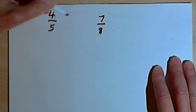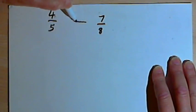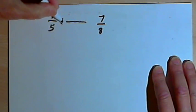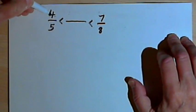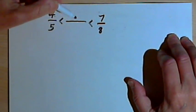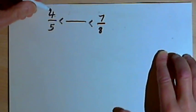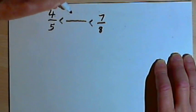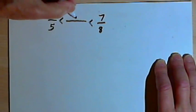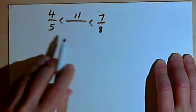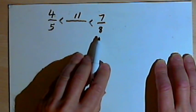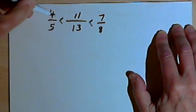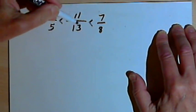Let's say I have two fractions, 4 over 5 and 7 over 8, and I want to find a fraction that fits in between these two. Since 4 over 5 is less than 7 over 8, the method says: take the numerators of the two fractions and add them together — 4 plus 7 is 11. Then do the same with the denominators — 5 plus 8 is 13. So 4 over 5 is less than 11 over 13, and that's less than 7 over 8.